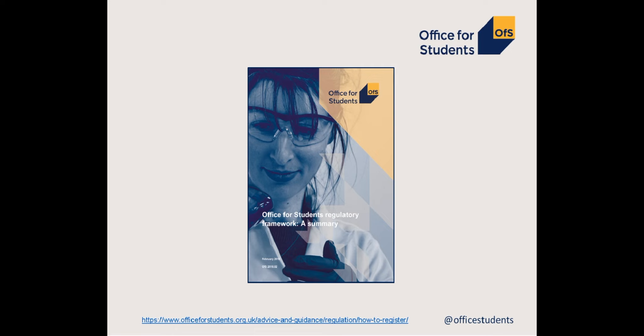The Office for Students is the new regulator for higher education in England. It was established on the 1st of January 2018 under the Higher Education and Research Act 2017. This enabled the establishment of the OFS board and the publication of the framework and guidance ahead of the organisation being fully operational. We officially opened on the 3rd of April. The framework will become fully operational on the 1st of August 2019.